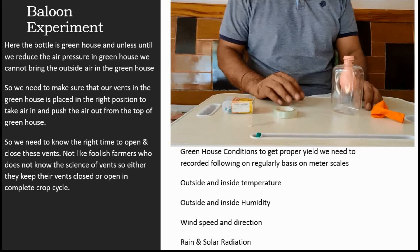In greenhouse conditions, to get a proper yield we need to record the following: outside and inside temperature, outside and inside humidity, wind speed and direction, rain, and solar radiation. Only with these readings can you determine when to open and close the vents of the greenhouse.